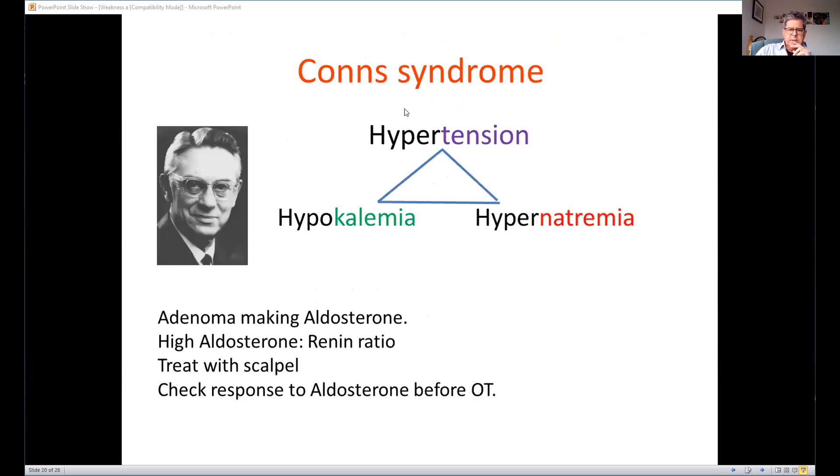So that is the Conn's syndrome triad. Hypertension, hypernatremia, hypokalemia. Caused by an adenoma which makes aldosterone. The aldosterone does a negative feedback on renin. So you have a high aldosterone, low renin ratio. You treat it by taking it out, and you can check response to spironolactone before surgery to see how it responds.